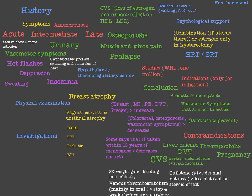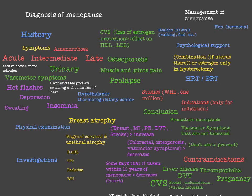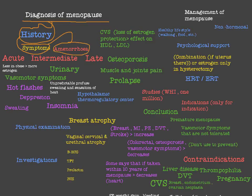Let's continue our talk about menopause. How to diagnose menopause: the first thing to do is take a history. In the history, we look at symptoms. The first and most important symptom is amenorrhea for more than one year. We divide symptoms of menopause into three categories: acute, intermediate, and late symptoms.